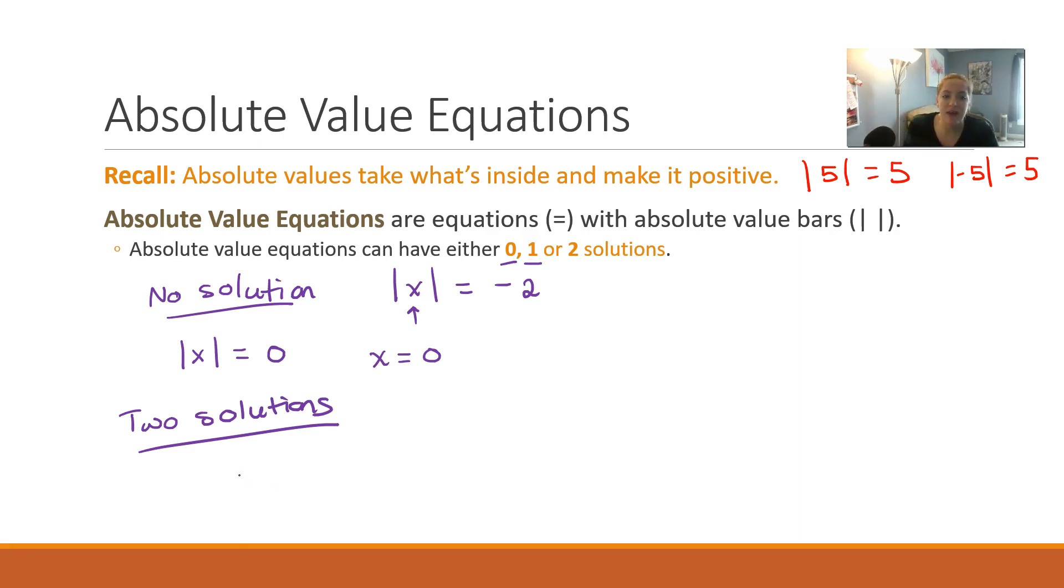When we have that problem, absolute value of x equals positive 5, what are the possibilities for x? What can I plug in for x? Well, of course, I could plug in positive 5, because positive 5, absolute value, stays positive.